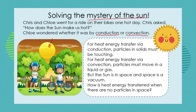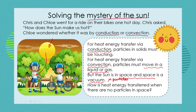We know that for heat energy transfer via conduction, the particles in solids must be touching. Now we've got a problem — the sun is not touching Chris and Chloe. We also know that the sun is in space, and space is a vacuum. There are no particles in space, no air particles. For heat energy to move via convection, the particles must move in a liquid or a gas. But the sun is so far away in outer space, and space is a vacuum with no air particles.